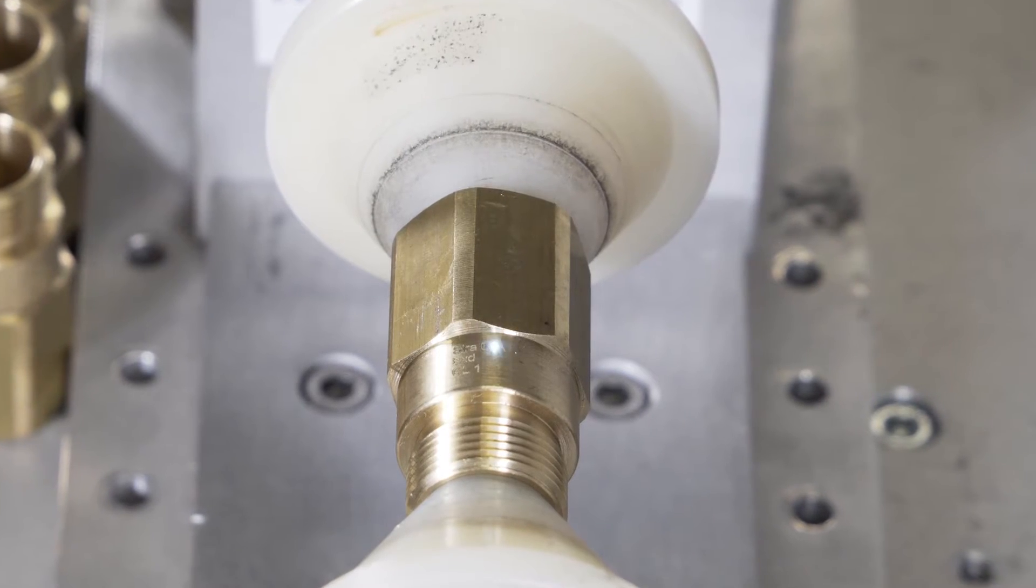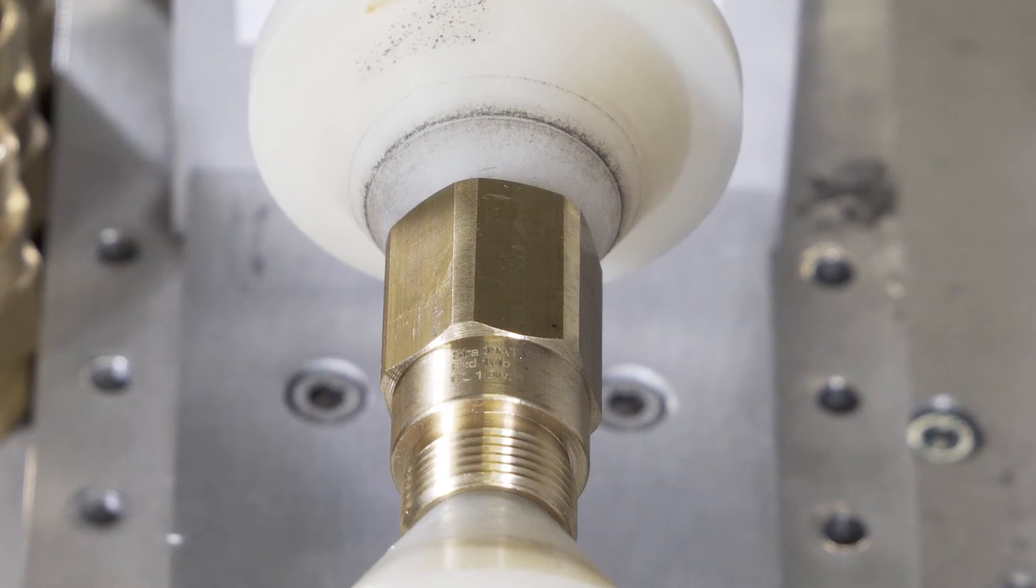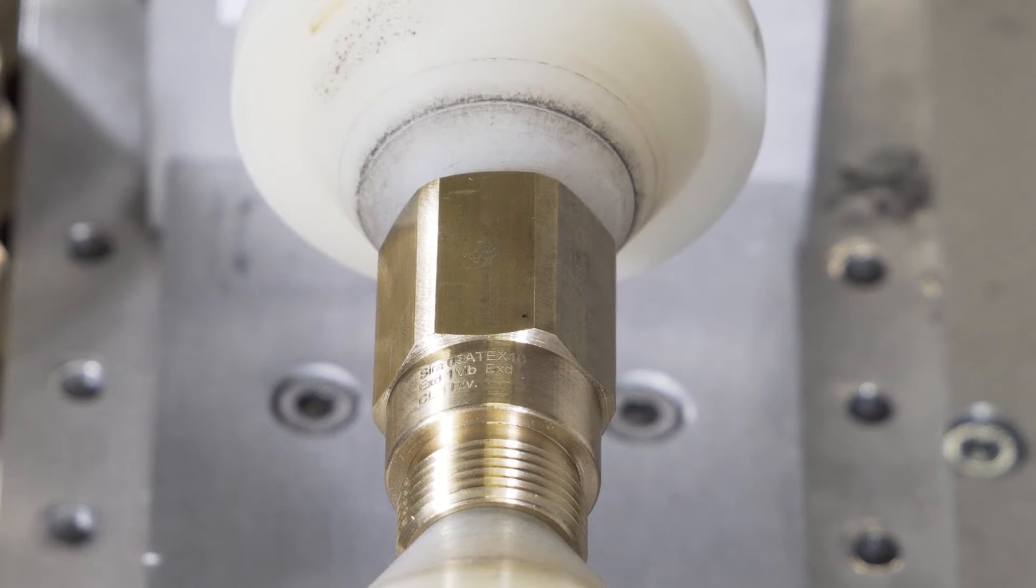In the process example, a brass component is having technical data marked around the circumference. The galvo mirrors steer the beam to its location on the part with high accuracy and repeatability.